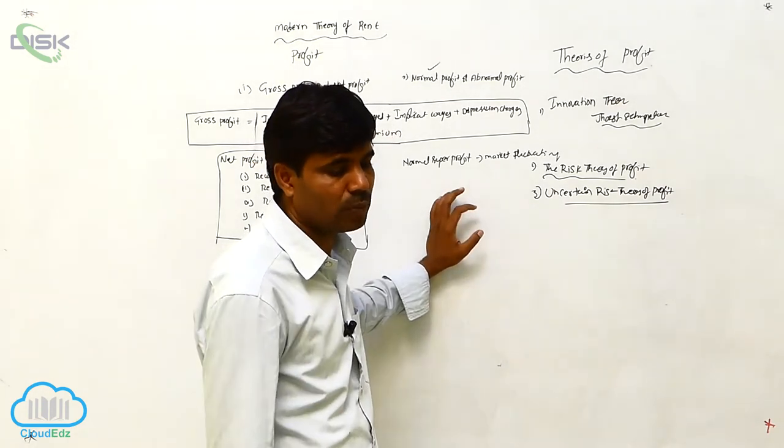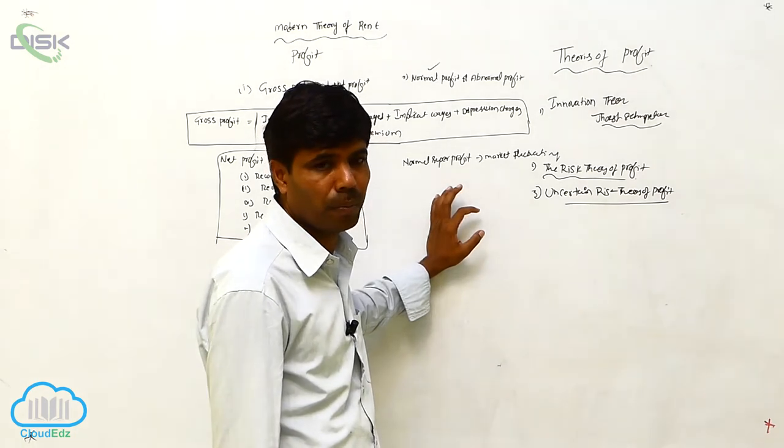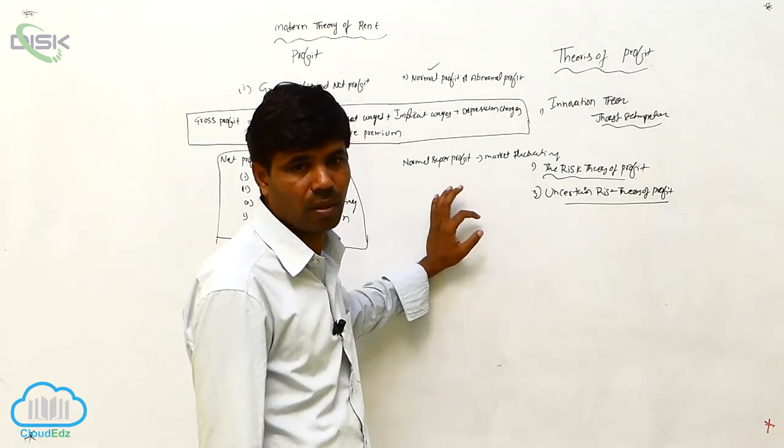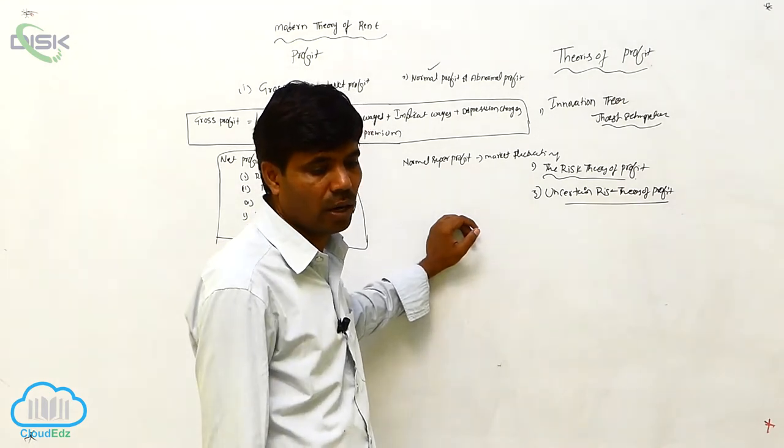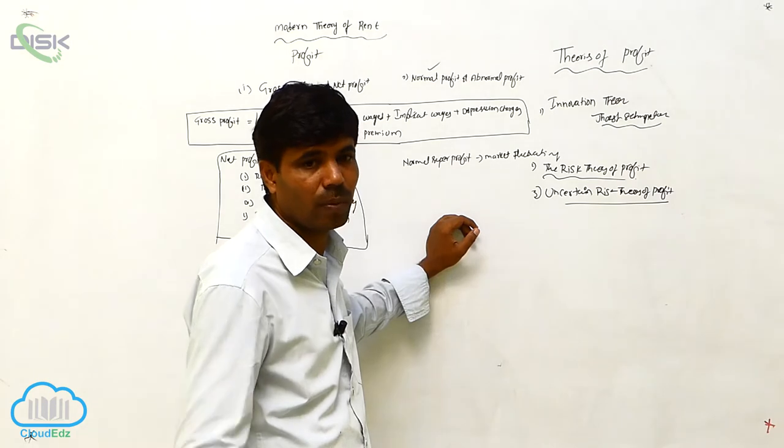Sometimes it plays the role of supply price. According to Knight, profit can't be transferred from one place to another place.